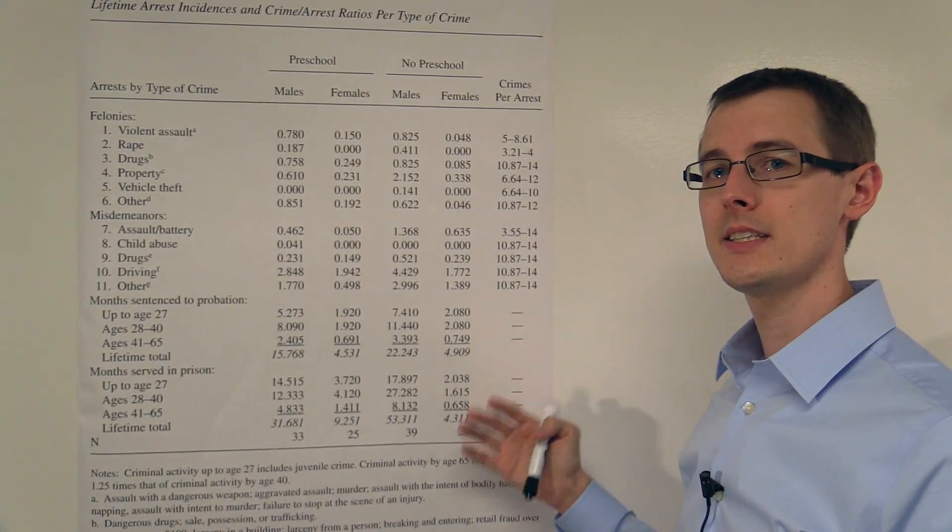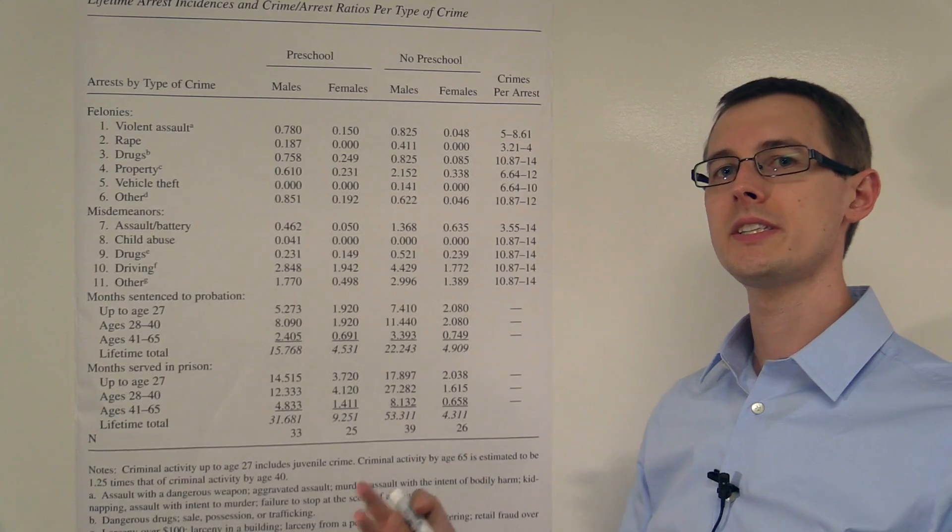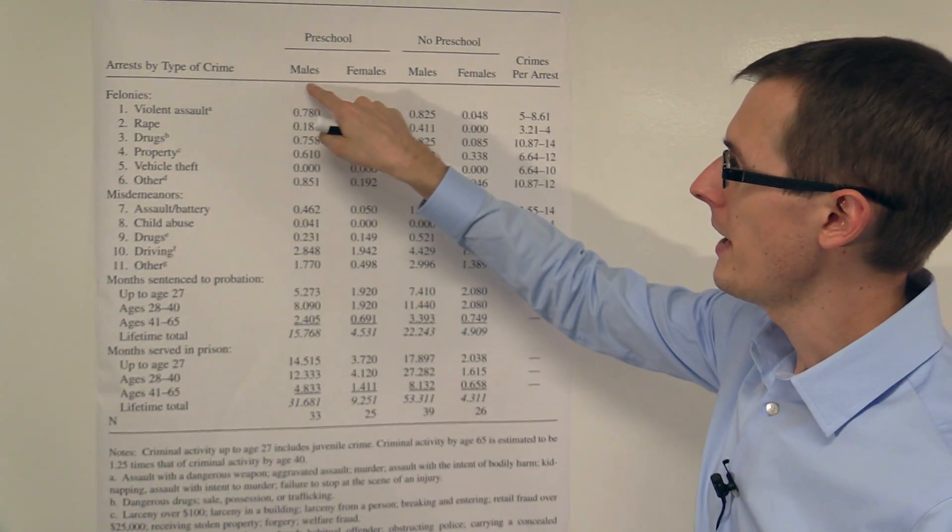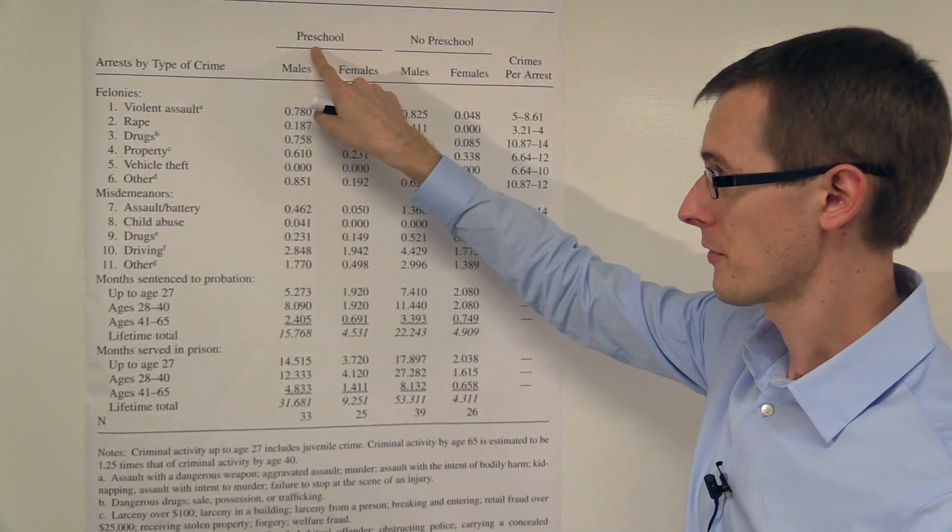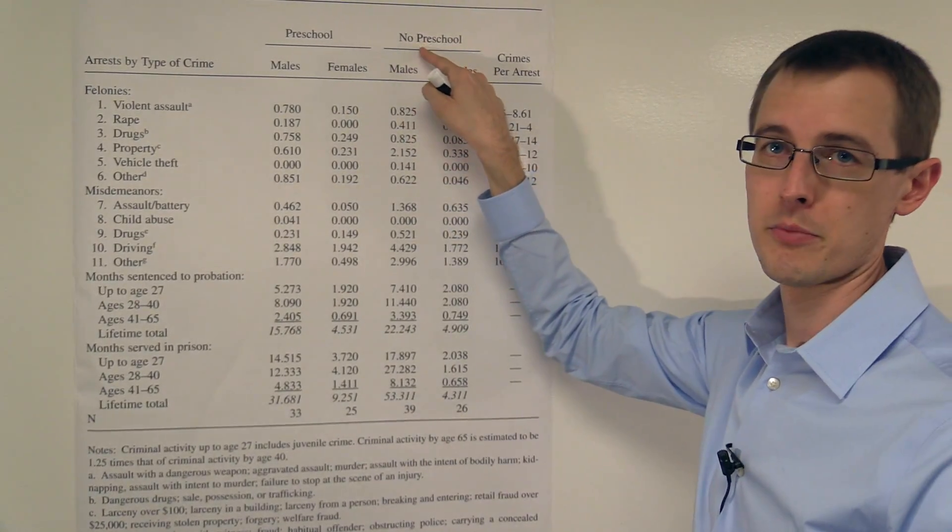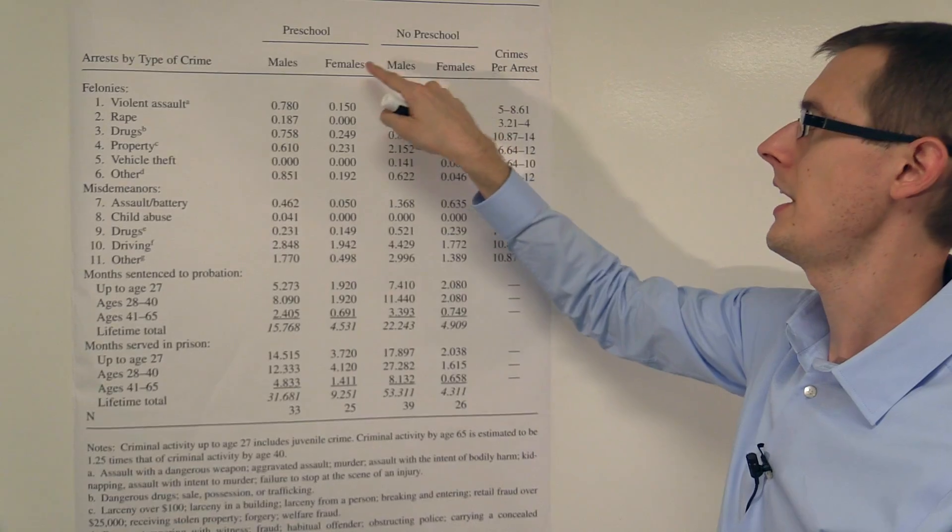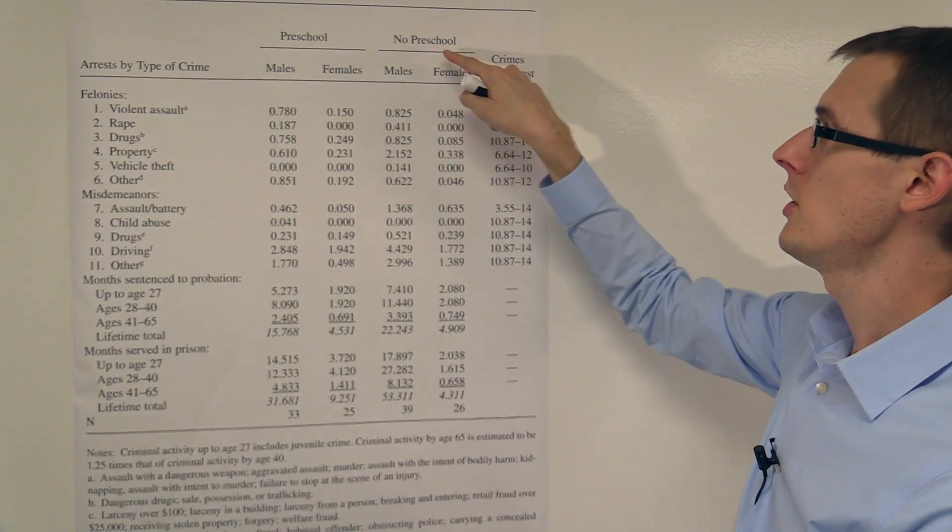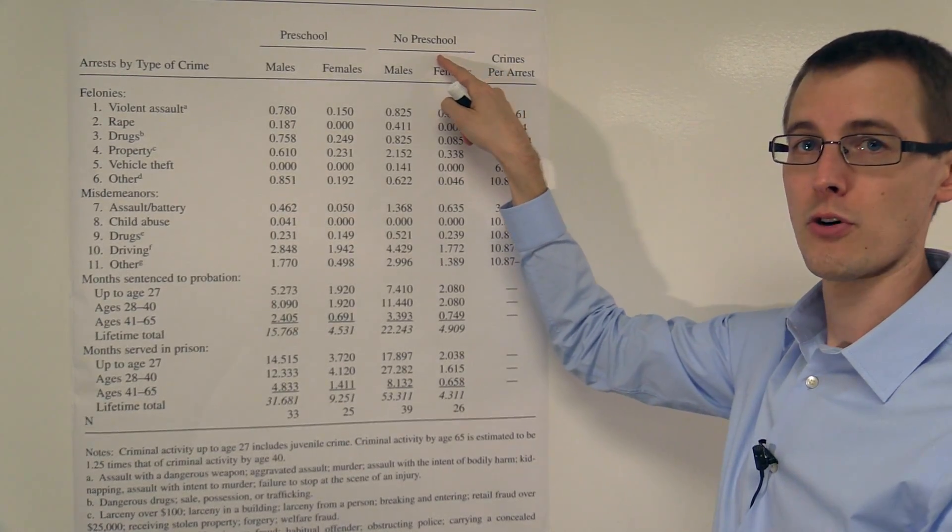Again, we're going to split the analysis by males and females, because we want to see if the treatment effects differ across these two groups. So here we've got males who went to preschool in the treatment group versus males who didn't go to preschool in the control group. And then we've got females who went to preschool in the treatment group versus females who didn't go to preschool in the control group.